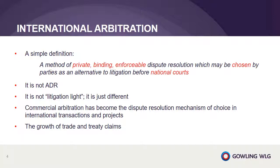Let's look at commercial arbitration and the reasons why parties arbitrate, starting with a simple definition. International arbitration is a method of private, binding, and enforceable dispute resolution which may be chosen by parties as an alternative to litigation before national courts. The first key word to focus on is 'chosen' — arbitration is a consensual process and parties have to agree in advance to arbitrate. If not, the default position is national courts and litigation.